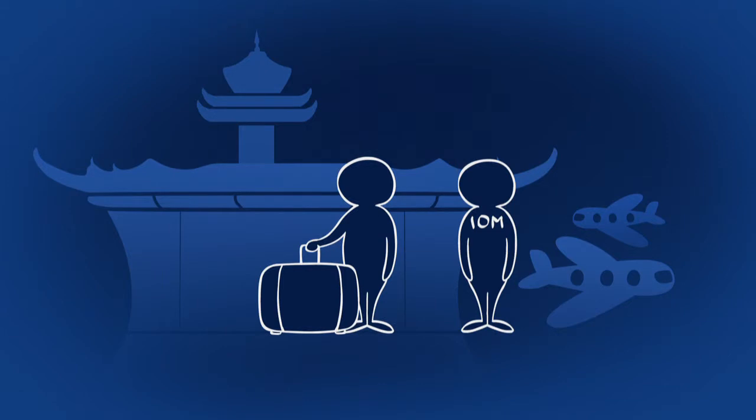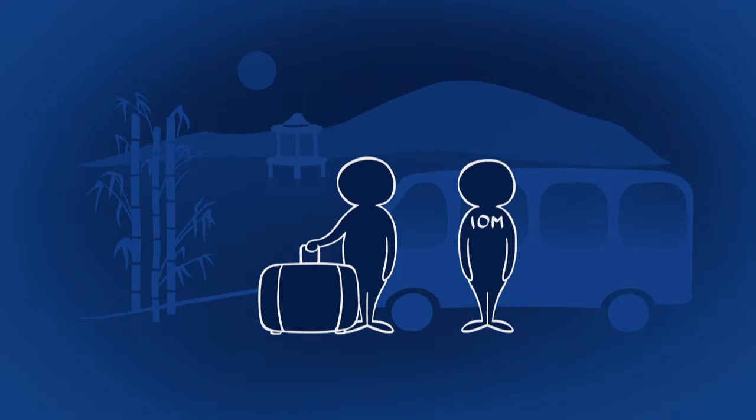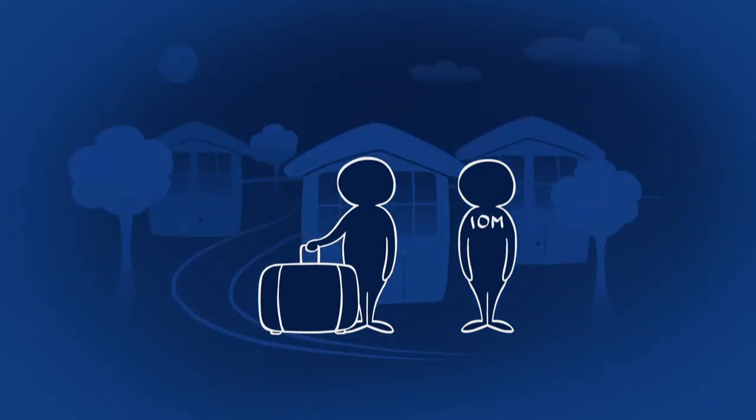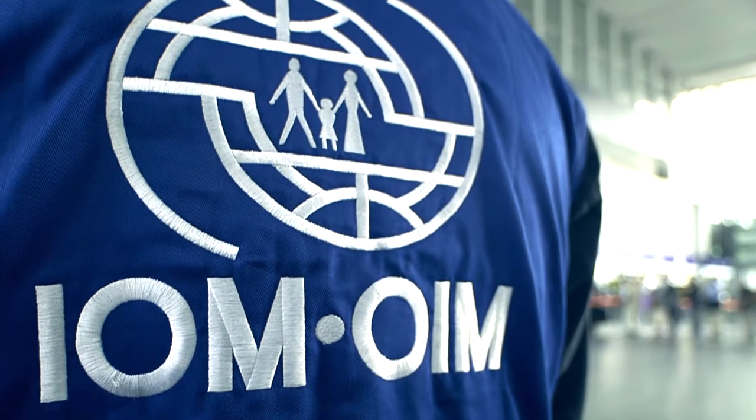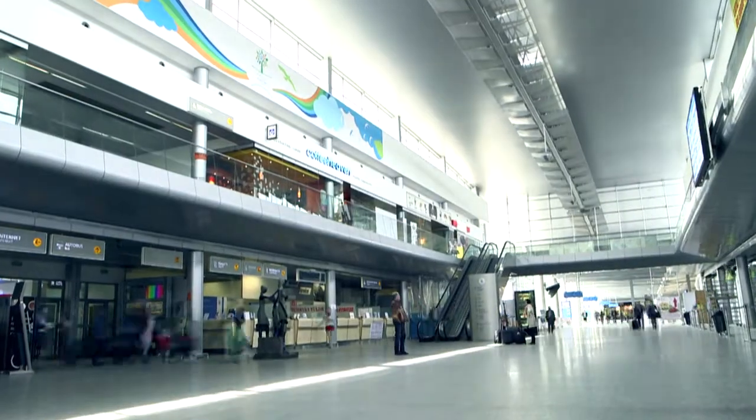In the country of destination, an IOM staff member will meet you upon arrival and arrange your onward travel from the railway station or airport to your final destination. You can rely on our continued support after your return. In addition to a small cash allowance, you may receive reintegration assistance to help you stand on your own feet.